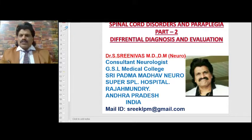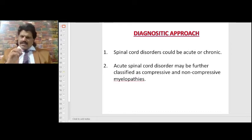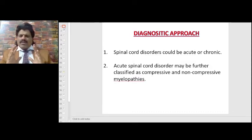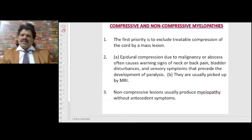Today we are going to talk about a very interesting topic: spinal cord disorders and paraplegia, Part Two — differential diagnosis and evaluation. The diagnostic approach: spinal cord disorders could be either acute or chronic.